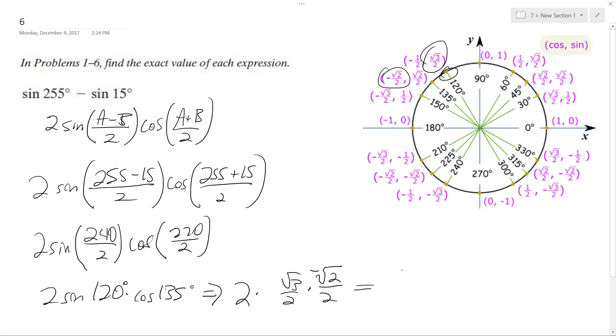So ultimately we get 2 times negative root 6 over 2.